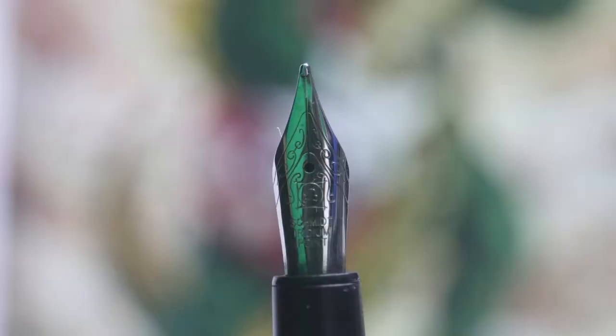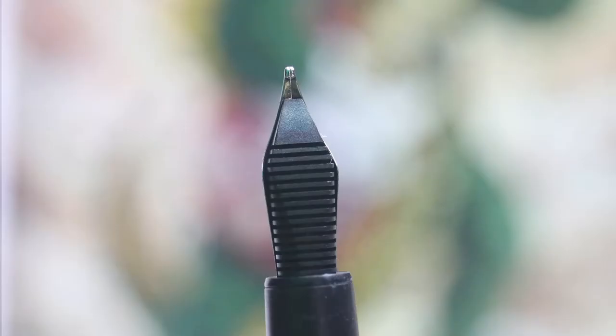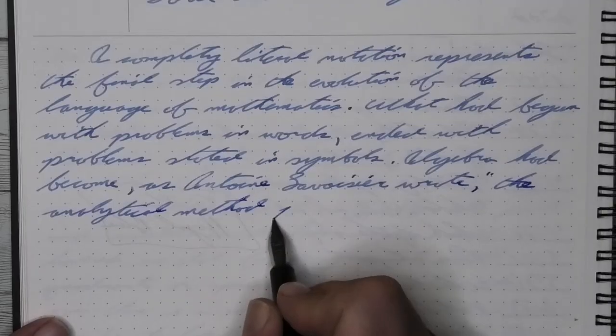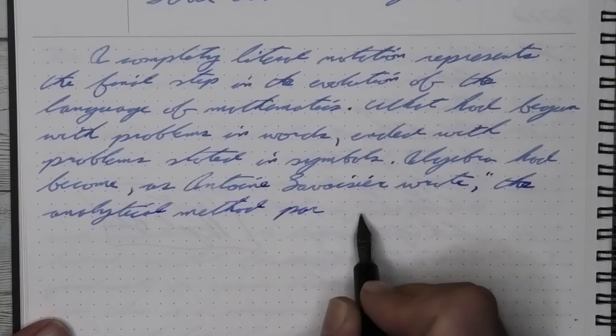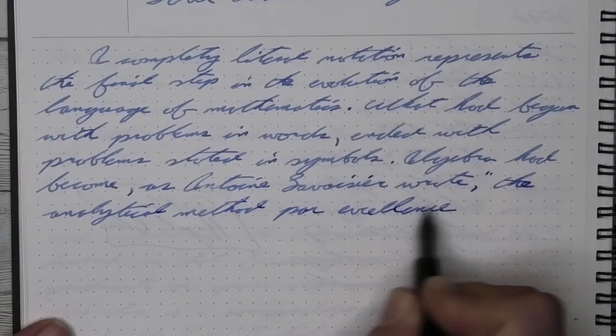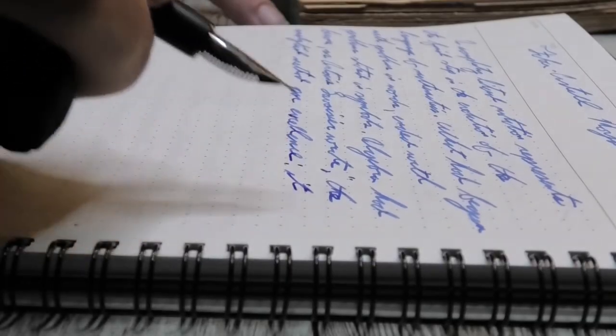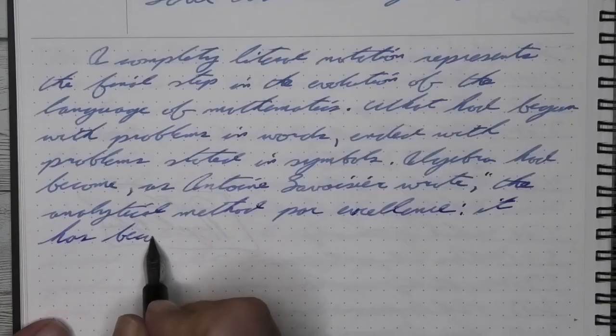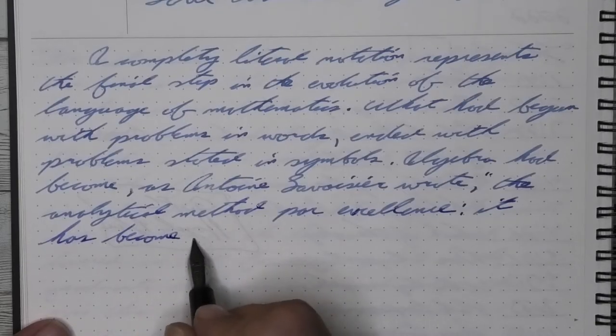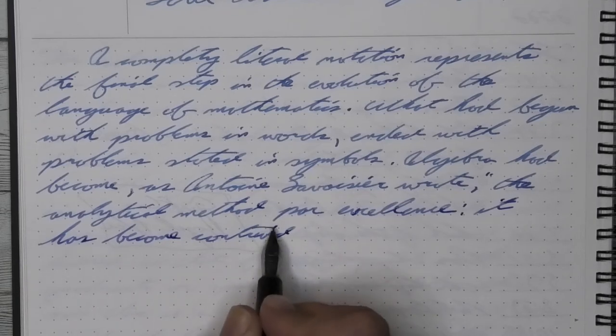This gets us to the nib. This has a steel broad nib. This nib certainly has some interesting scroll work and nice branding on it. And I always appreciate when a company brands their nibs for their own, even when the nibs themselves are outsourced like this Bach nib.